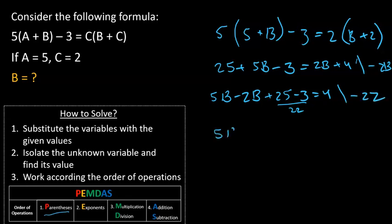We're left with 5B minus 2B equals 4 minus 22. 3B equals minus 18 and divided by 3 we get B equals minus 6.